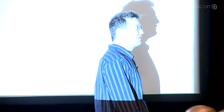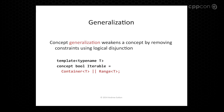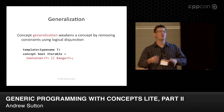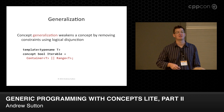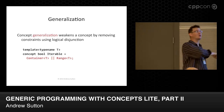Technically there's copy and move and we can make a hierarchy out of that too. It just doesn't happen all the time. Generalization is actually a little bit different — here we can actually weaken a concept by removing constraints. For example, I might define iterable as a container or a range. I'm not really removing constraints, I'm taking the disjunction of these things, but it definitely defines a weaker concept.